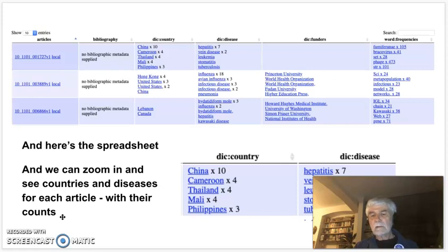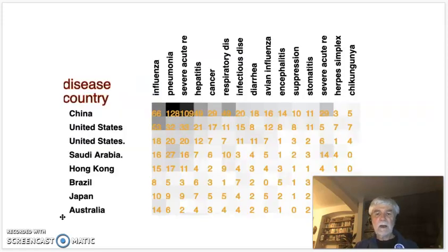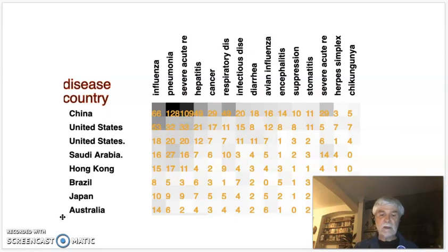We get the results in a spreadsheet and a correlation matrix so you can see which diseases occur in which countries.